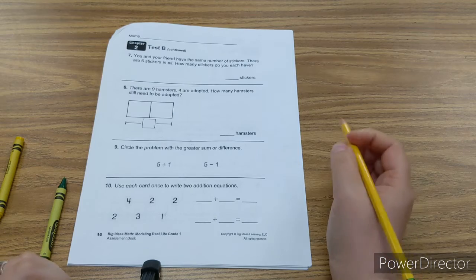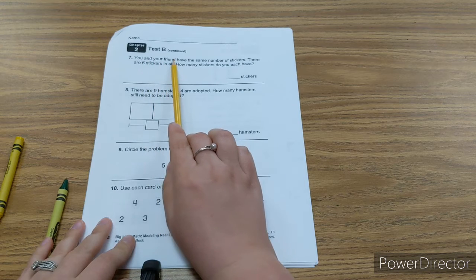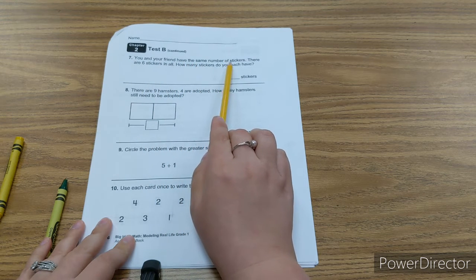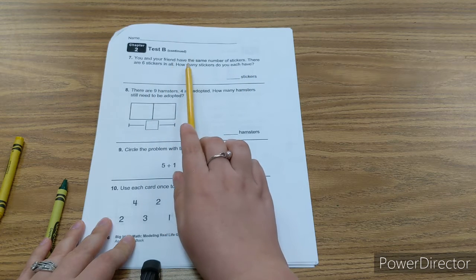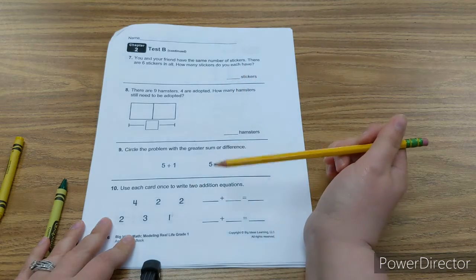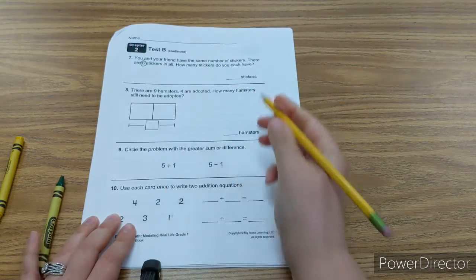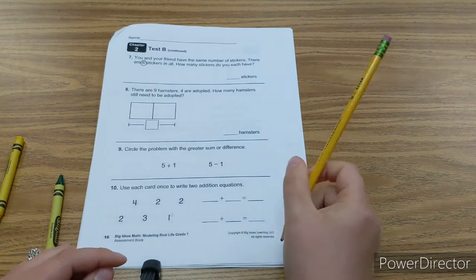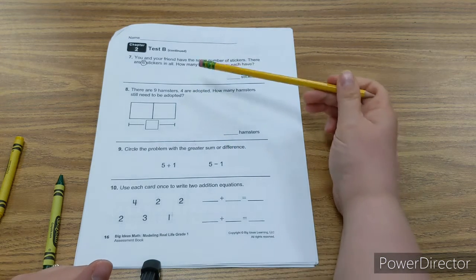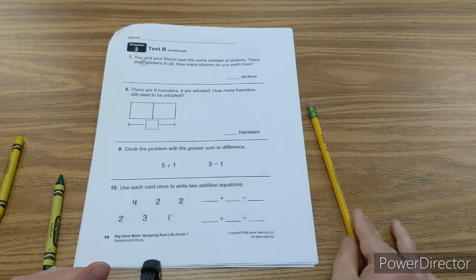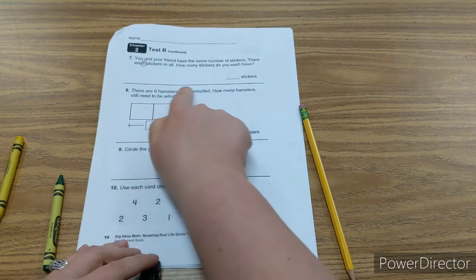Now we're on the last page of our test. You and your friend have the same number of stickers. There are six stickers in all. How many stickers do each of you have? So your whole is six. You want to find the double that works. Hmm plus hmm equals six. Draw your picture to help you of your stickers.